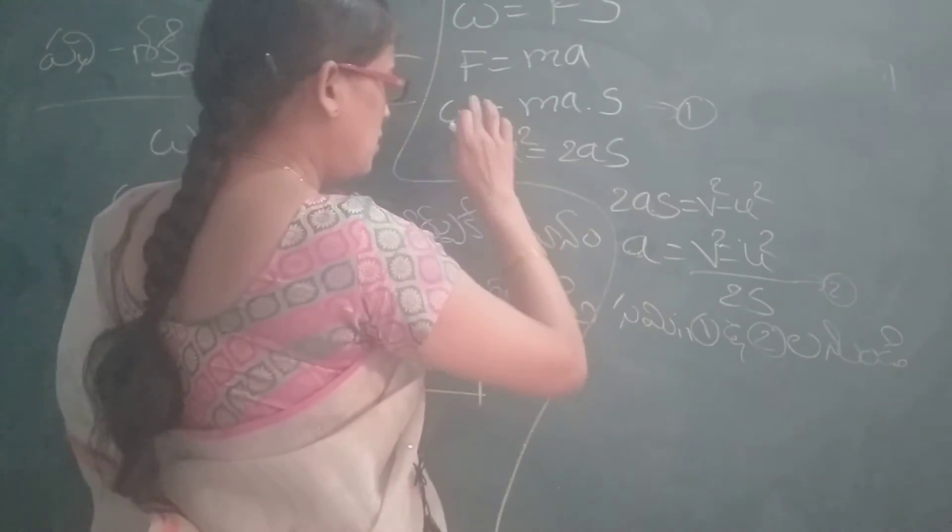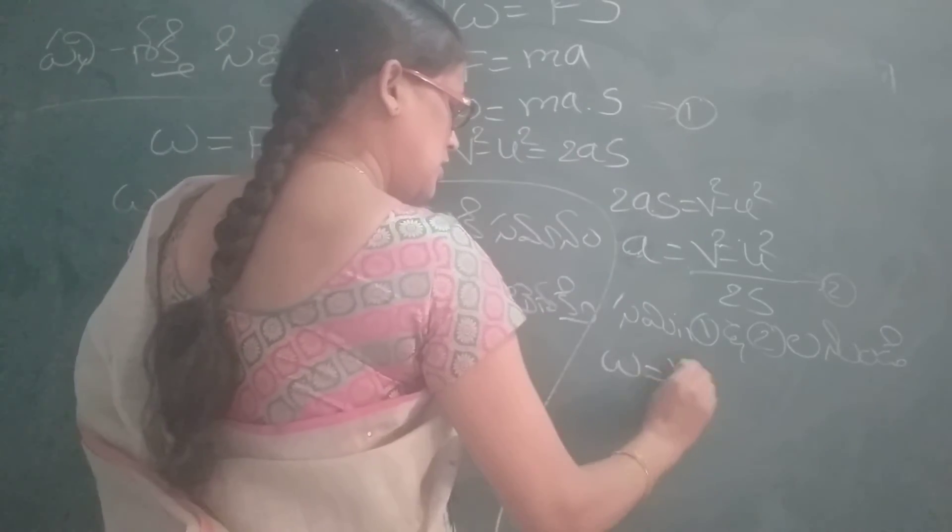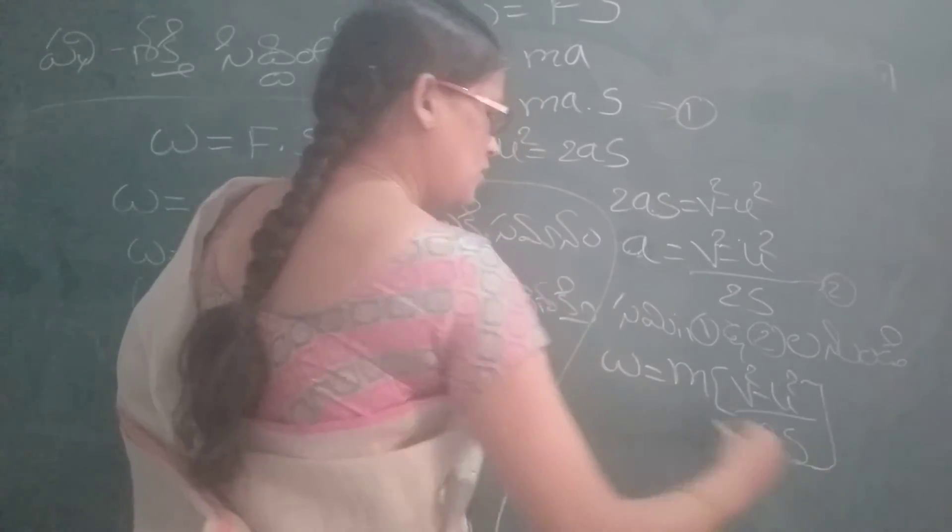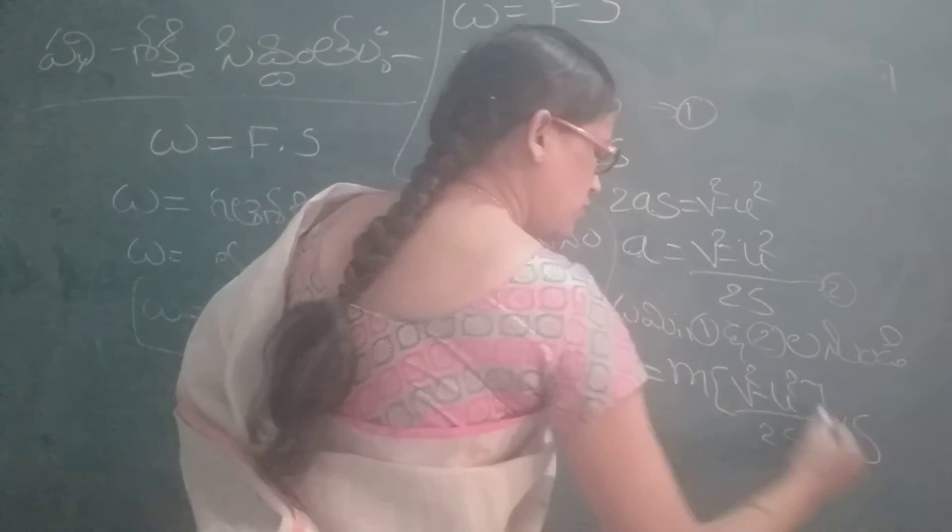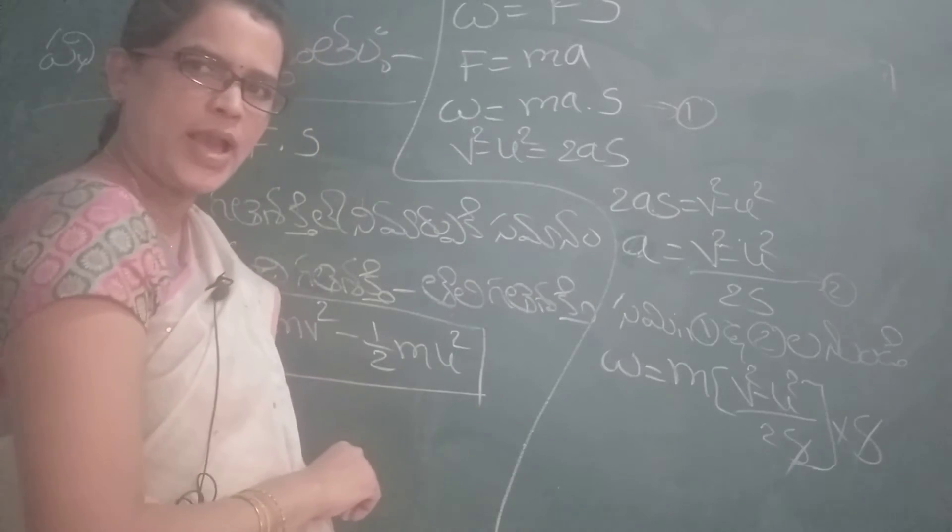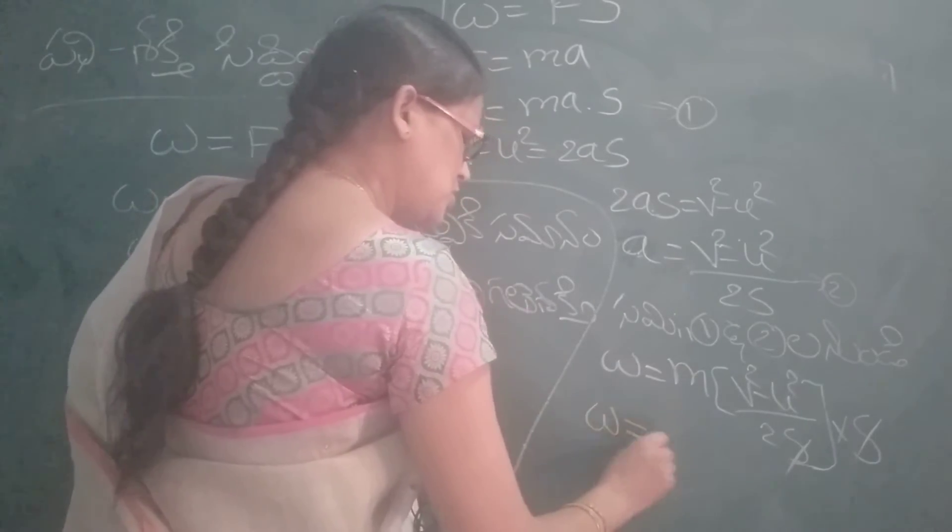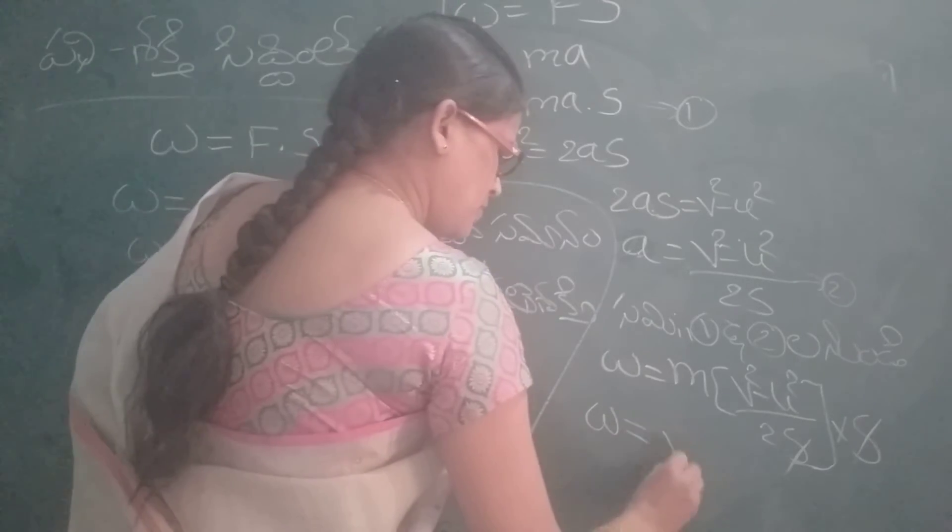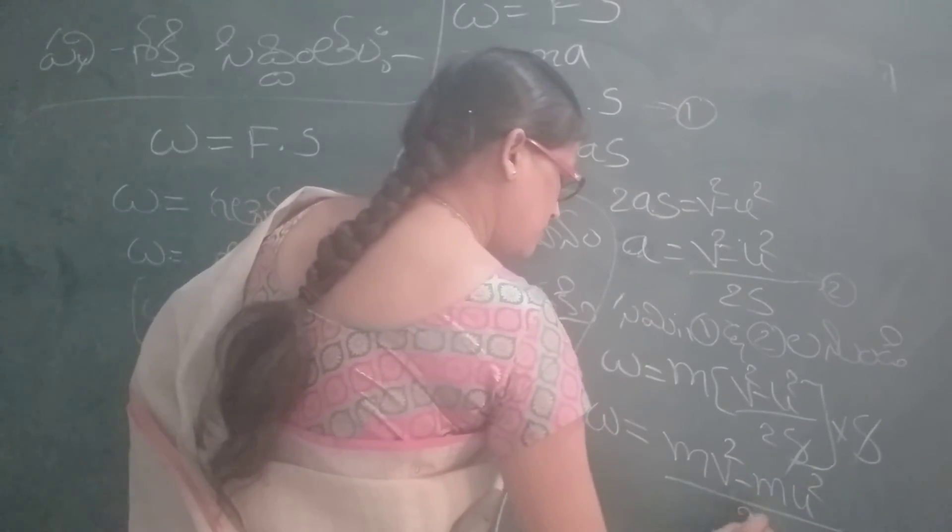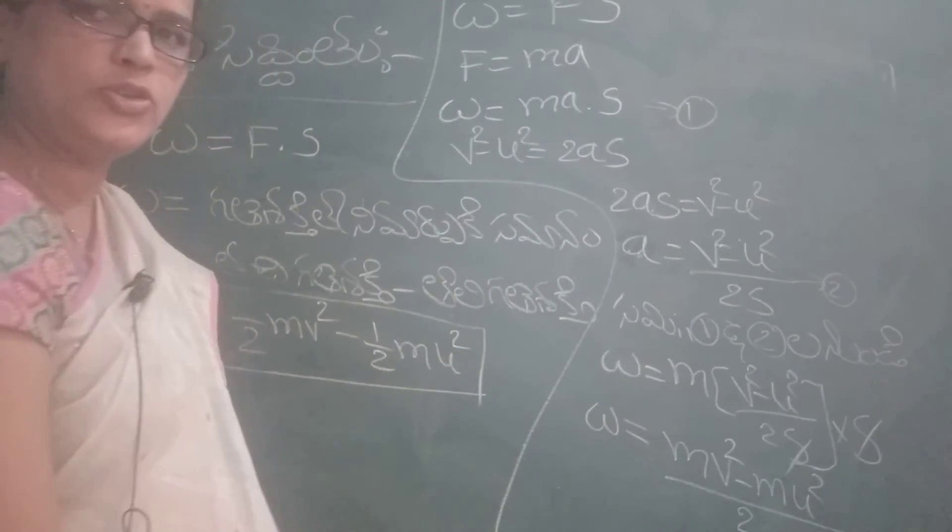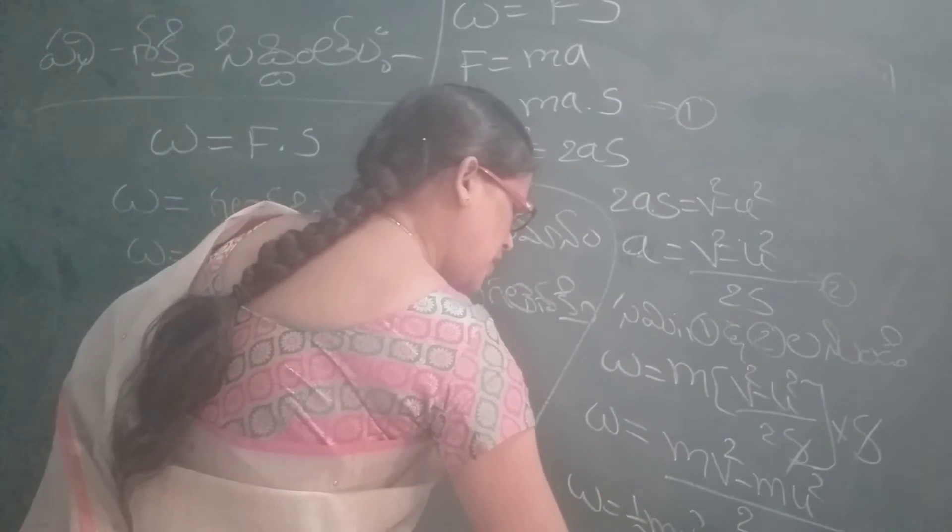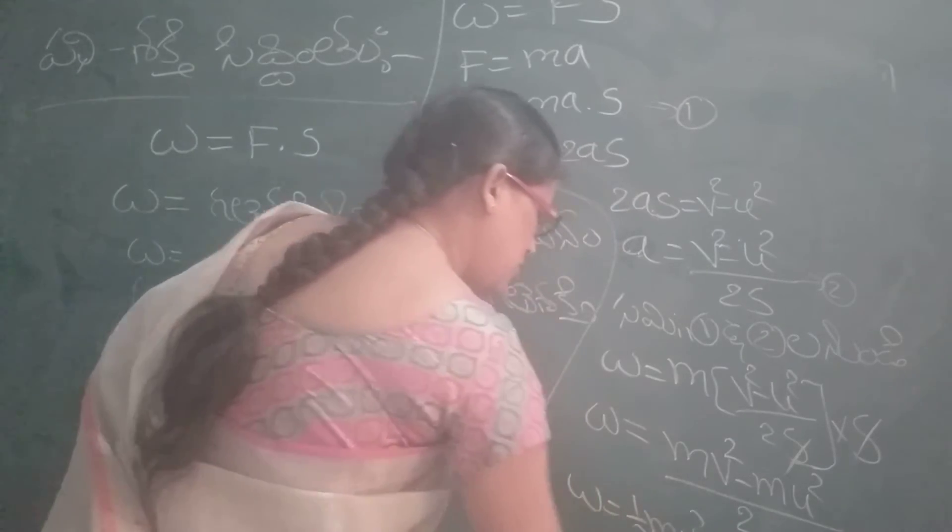W is equal. W is equal Y.S. W is equal V square minus U square by 2 S into S. S.S. Cancel. W is equal to m v square minus m u square by 2. W is equal to half m v square minus half m u square.